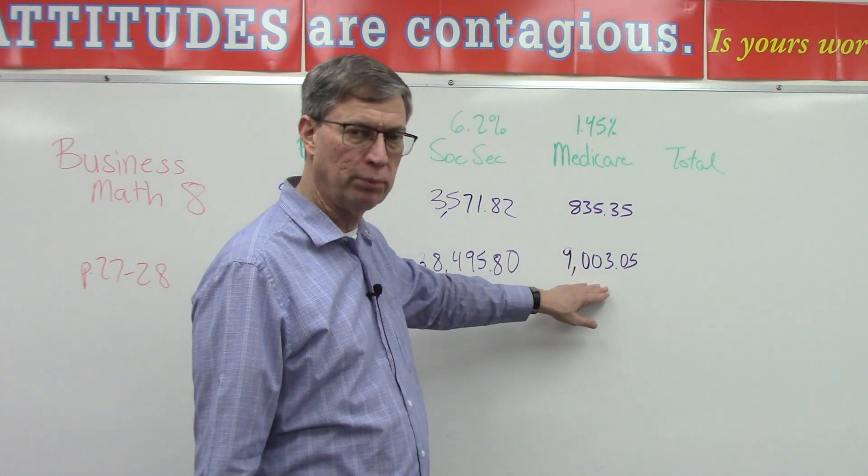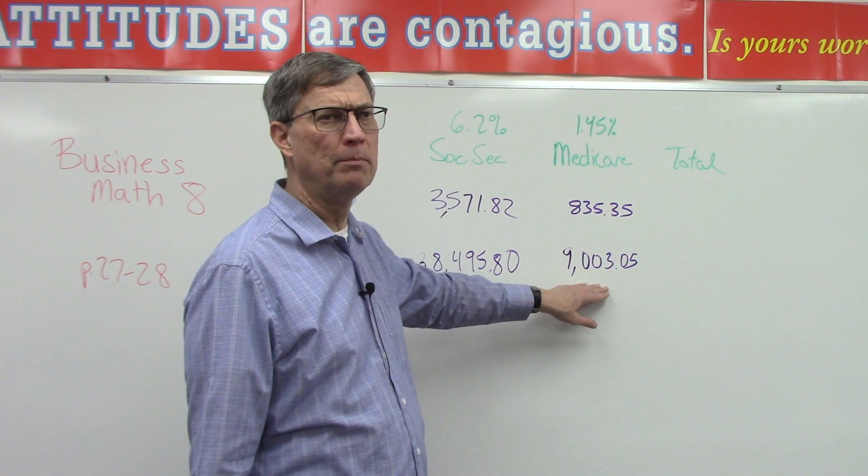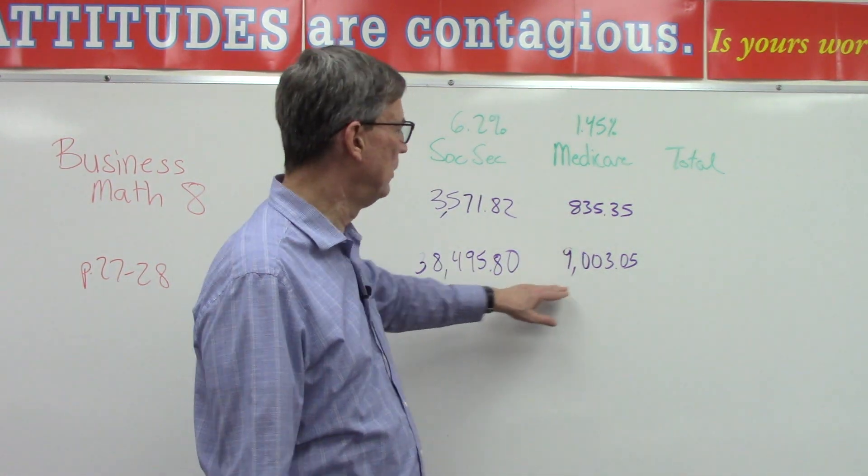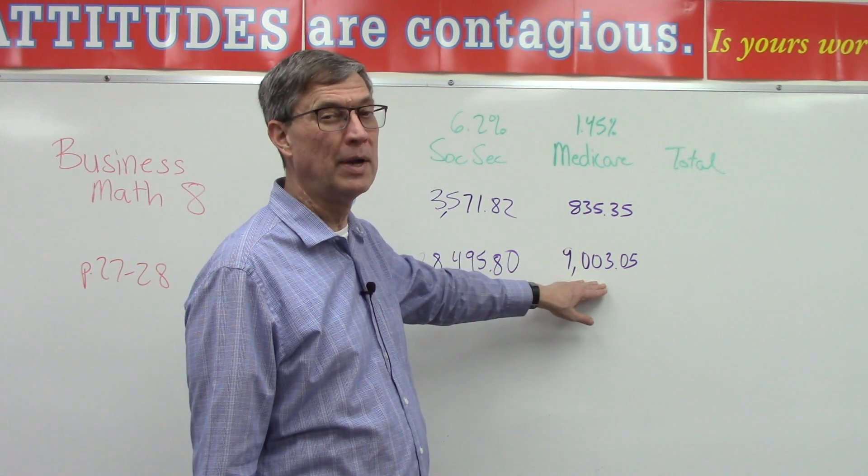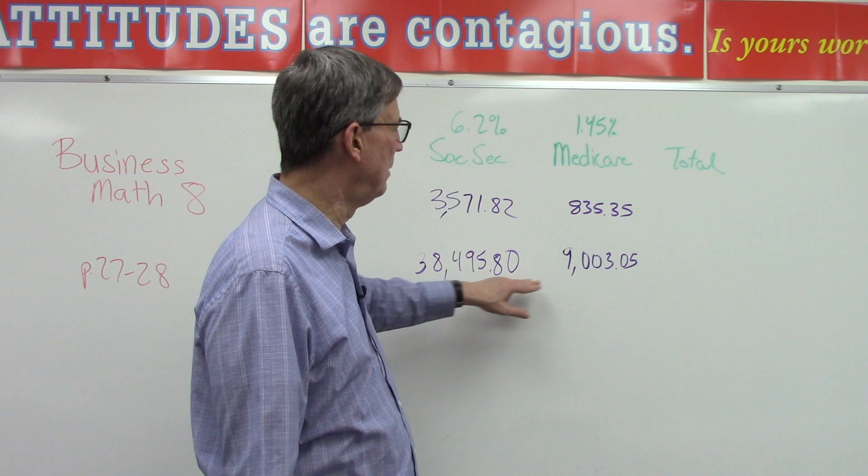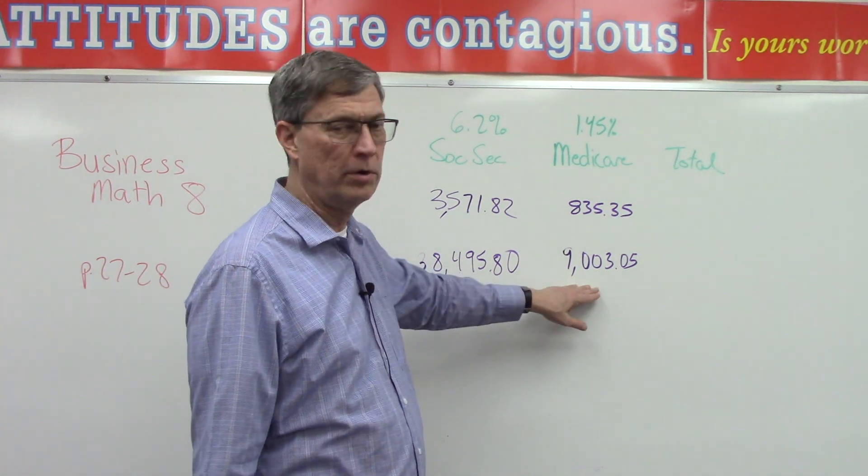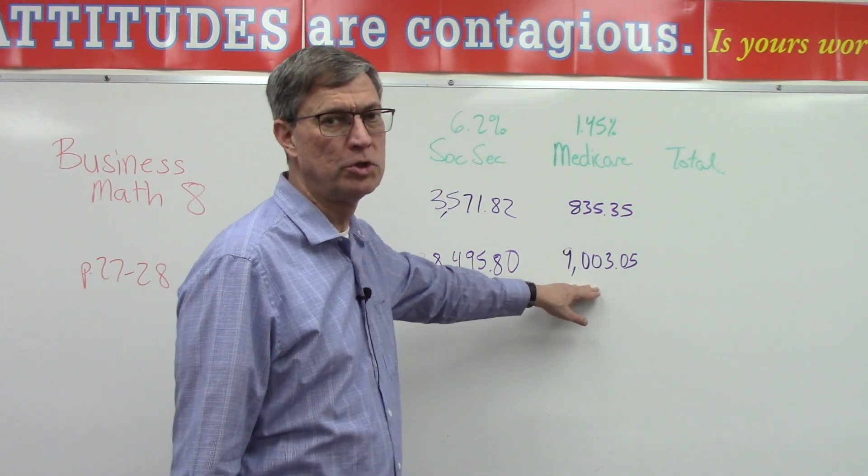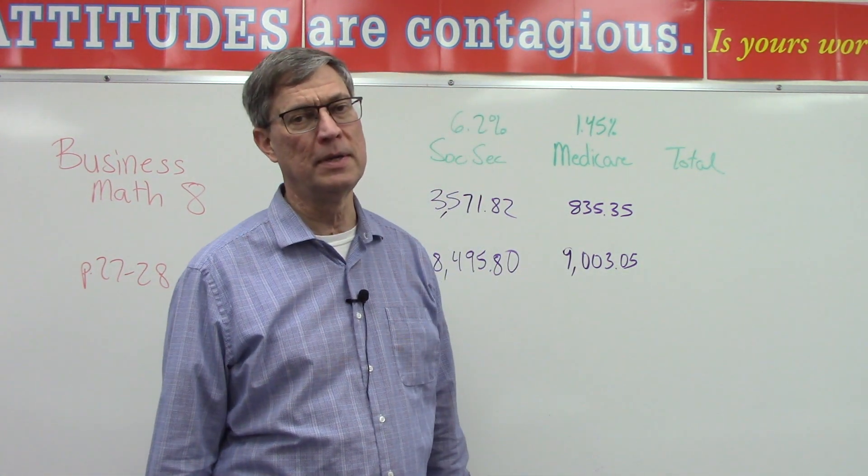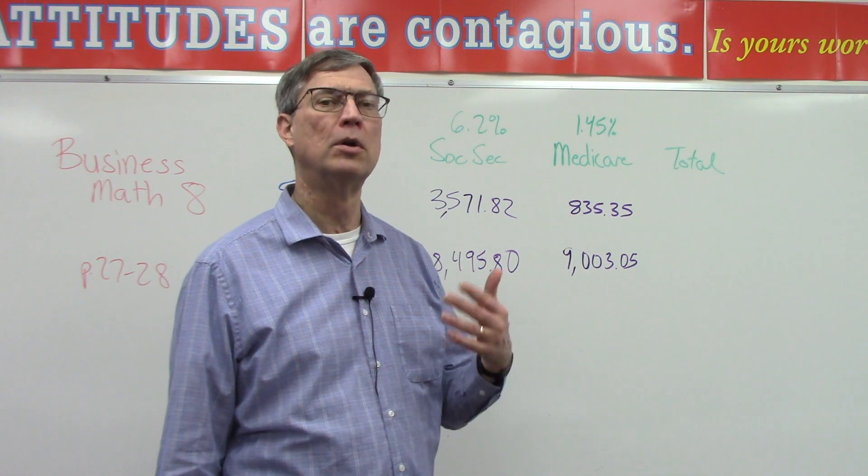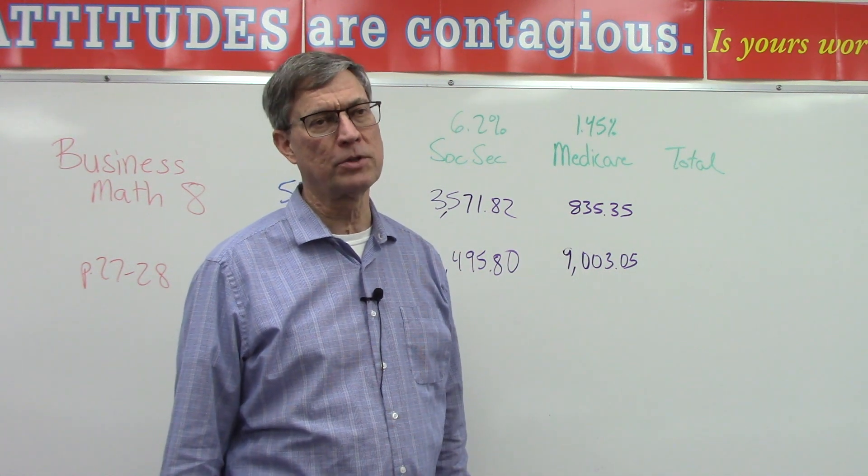So let's think through again what we have to do for the last step. We don't just add these, because we realized the employees are having to pay this amount and have that withheld from their paycheck, and then the employer has to match it with the same amount. So we will add these together and multiply it times two, and that's how we get the total that he has to send in to the government every quarter.